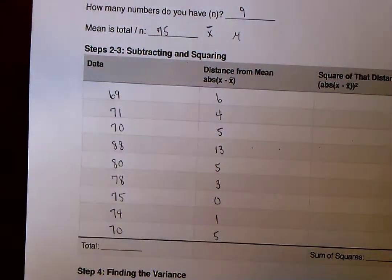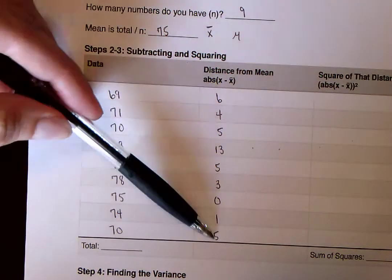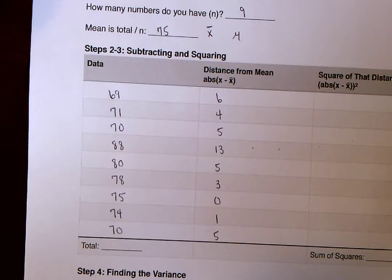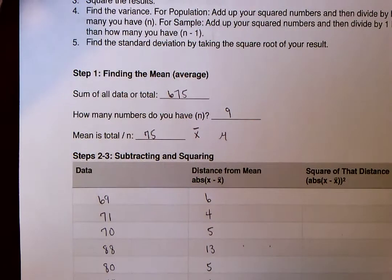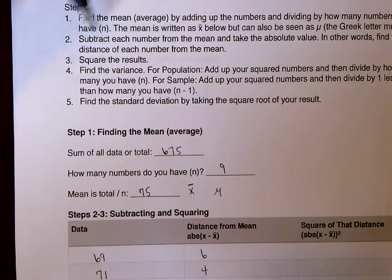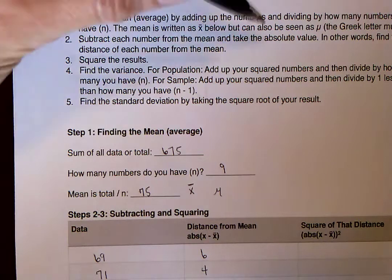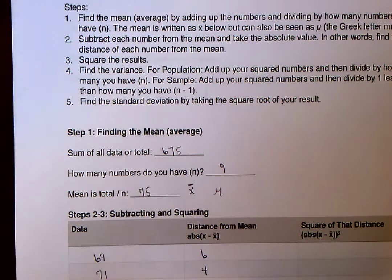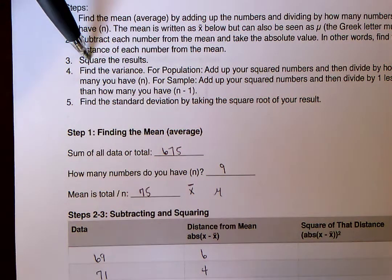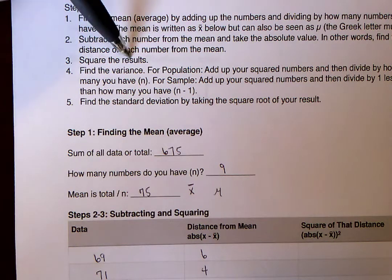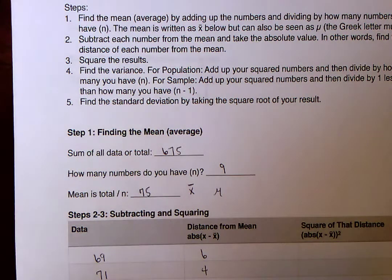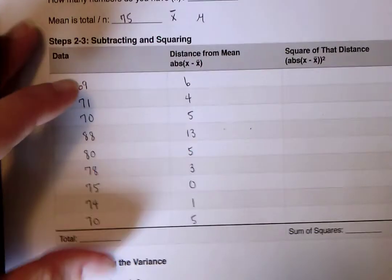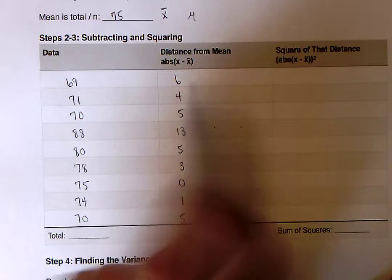So now we have all of these numbers in here, and it says here, once we do step 2, step 2 is subtract each number from the mean and take the absolute value, or find the distance of each number from the mean. Step 3, we're going to use this table to square the results. We're going to square those distances that we found.